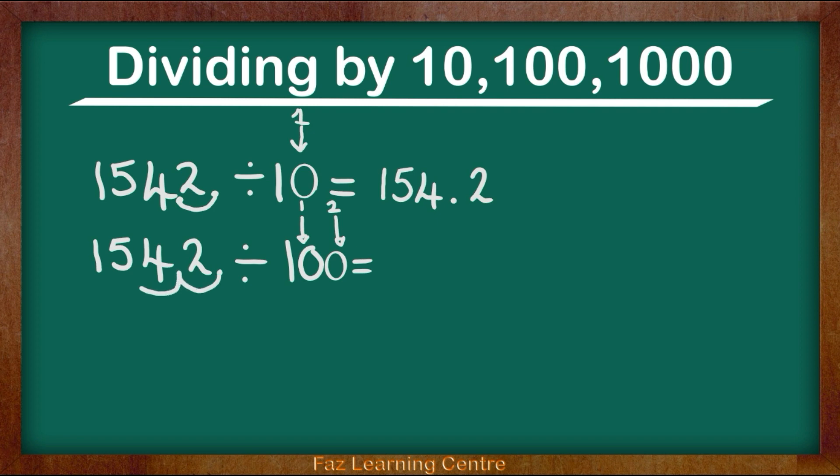1, 2. So now my decimal has been moved here in between 5 and 4. I am going to write down what my answer is. 1, 5, then I have a decimal point, 4, 2. So now my answer is 15.42. 1542 divided by 100 gives me 15.42.